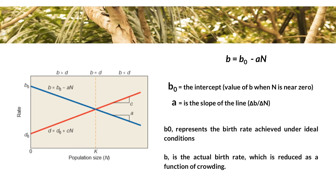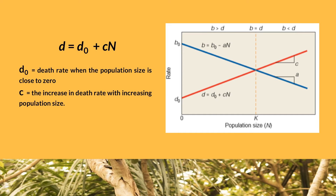The intercept B sub-0 represents the birth rate achieved under ideal conditions, such as no crowding and no resource limitation, whereas B is the actual birth rate, which is reduced as a function of crowding. We can represent the change in death rate as a function of population size by using this formula: D equals the ideal death rate, or D sub-zero, plus the slope of death rate C, multiplied by the population density, or N. The constant D sub-zero is the death rate when the population size is close to zero, where there is no crowding or resource limitation, and the constant C represents the increase in death rate with increasing population size.